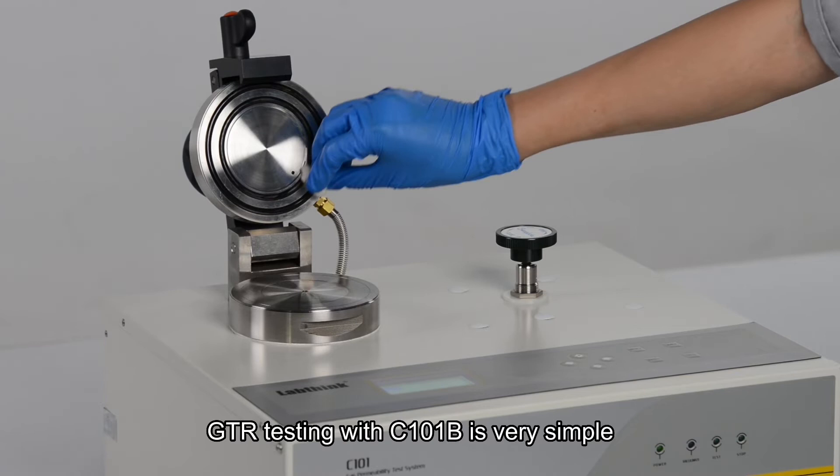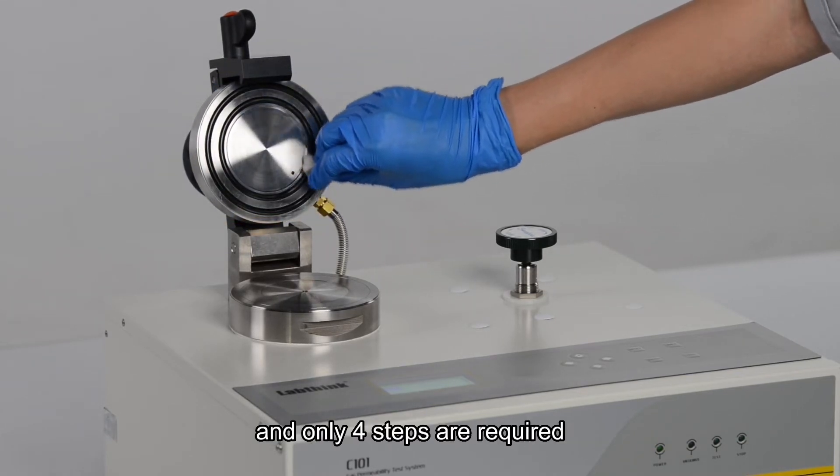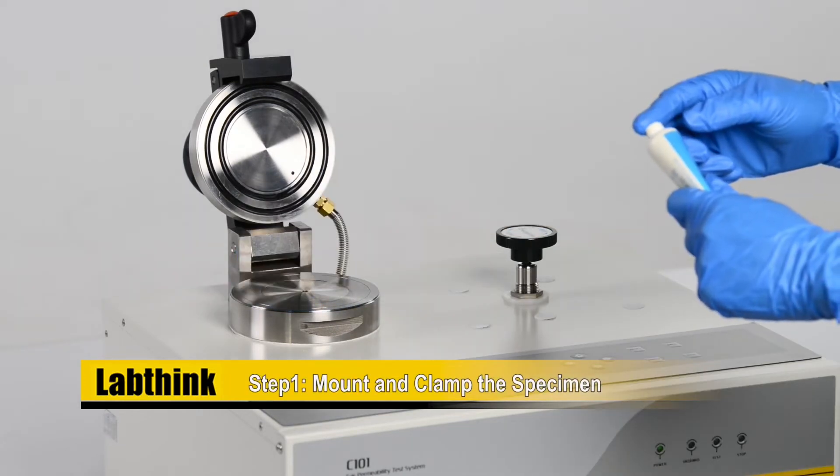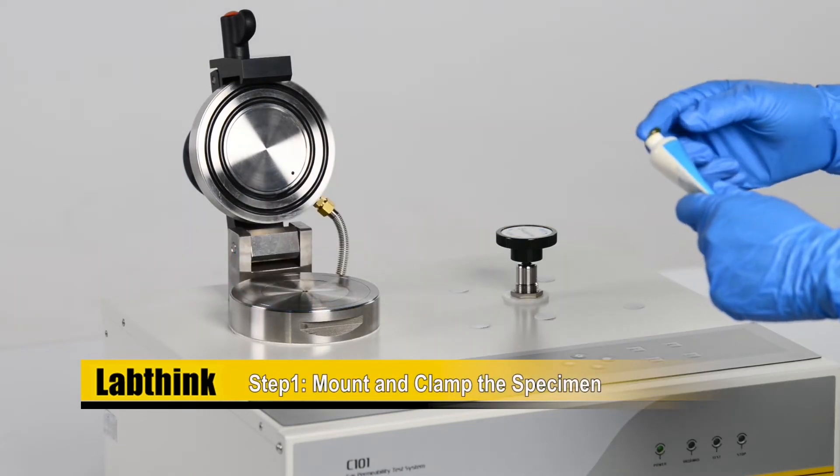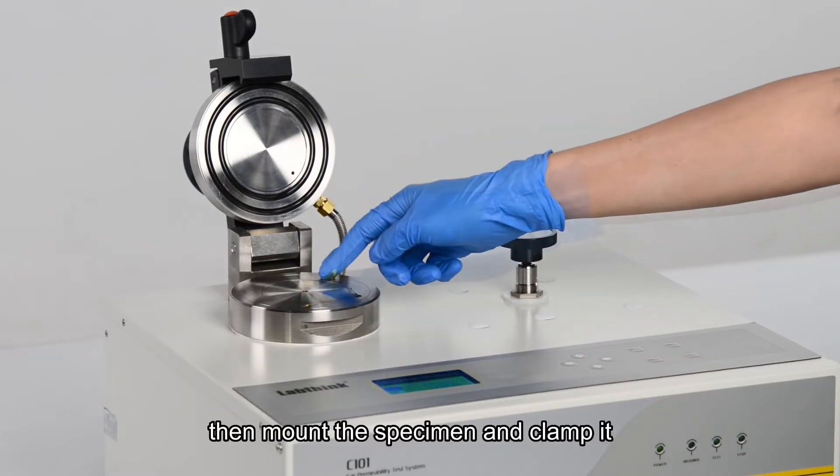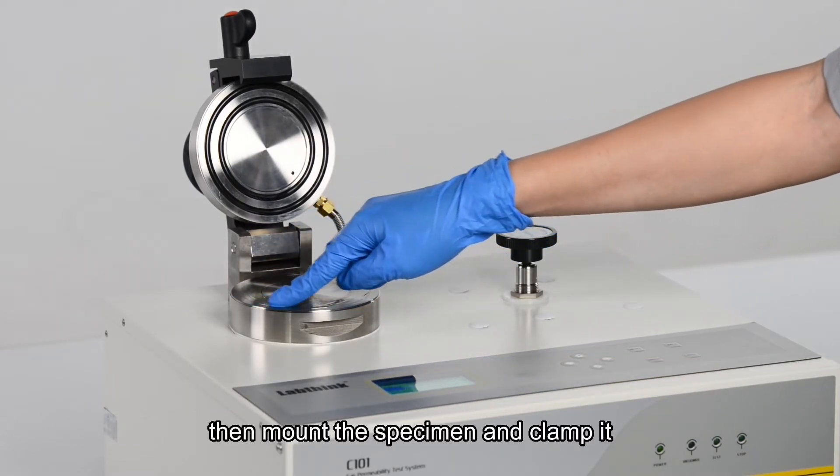GTR testing with C101B is very simple and only 4 steps are required. Step 1: Mount and clamp the specimen. First, we need to apply vacuum grease. Then mount the specimen and clamp it.